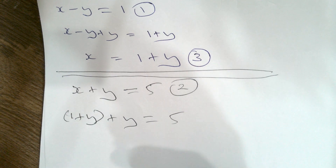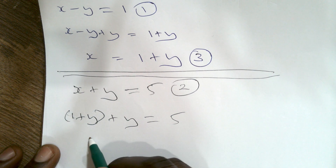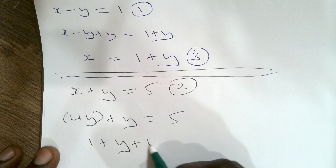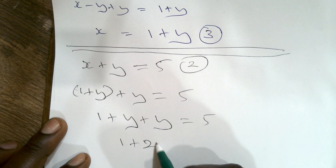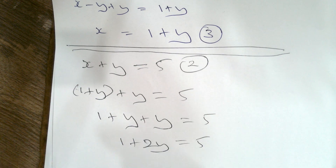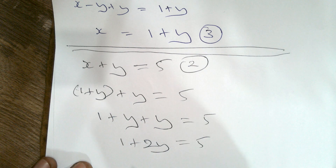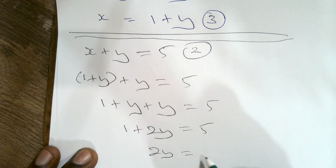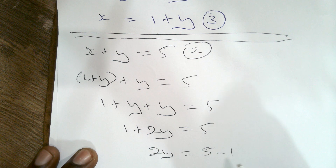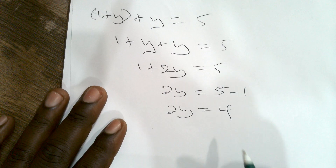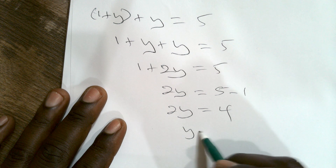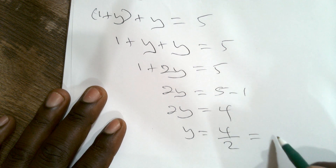So we have 1 plus y plus y equals 5, which simplifies to 1 plus 2y equals 5. We don't have to go through long transposition steps — 2y equals 5 minus 1, so 2y equals 4, and therefore y equals 4 divided by 2, which is 2.